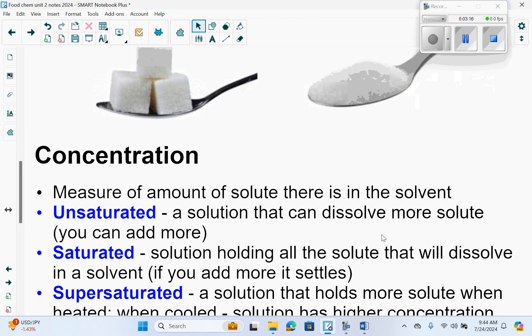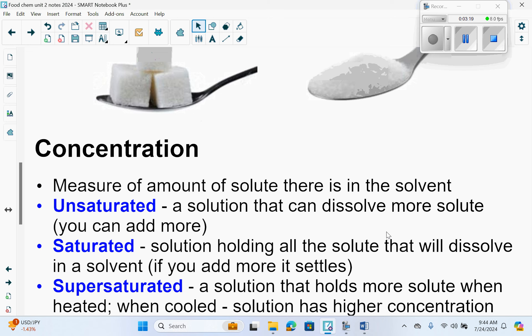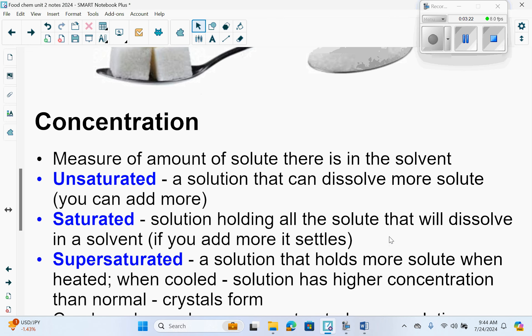Concentration is a measure of the amount of solute in the solvent. There are three different types of solutions. Unsaturated solutions can dissolve more solute—you can add more and it'll continue to dissolve. Saturated solutions hold all the solute that will dissolve in a solvent. If you try to add more, it settles. A good example is chocolate milk. If you add too much syrup, the milk cannot hold anymore and it settles to the bottom.